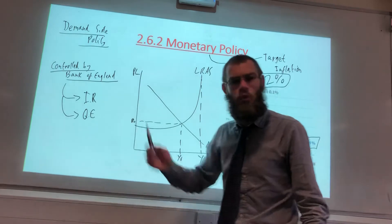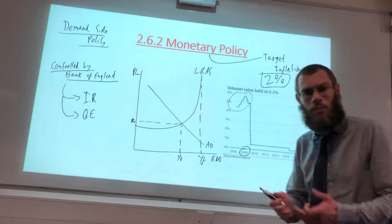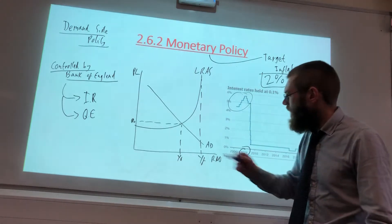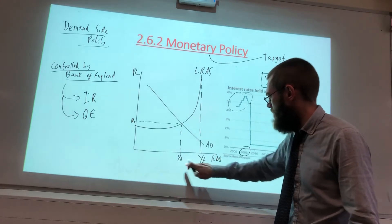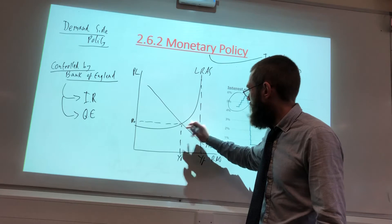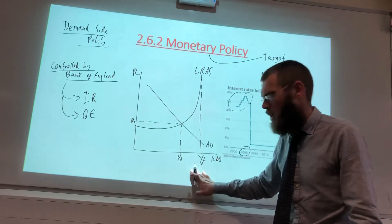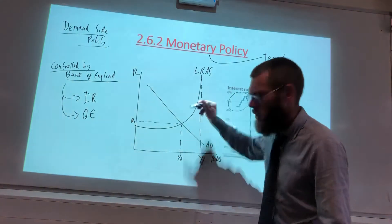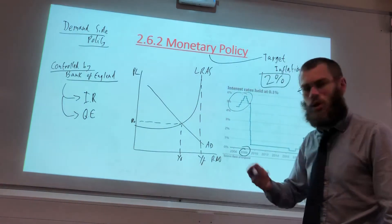Quantitative easing has been used because interest rates are already at record lows — and every time they're reduced it becomes a new record low. Looking at our AD/AS diagram: I've got AD here, Y zero, and a big level of unemployment. We could move aggregate demand to get unemployment to fall, and as long as we don't push too far up we won't suffer too much inflation.